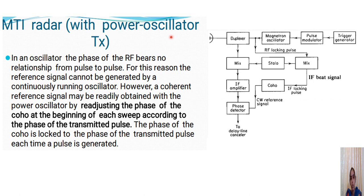Now we have an MTI radar with a power oscillator transmitter. Instead of a power amplifier, a magnetron oscillator is employed. In the oscillator, the phase of the RF bears no fixed relationship from pulse to pulse, so we cannot generate the reference signal from a continuously running oscillator. A coherent reference signal may be obtained by readjusting the phase of the coherent oscillator at the beginning of each sweep according to the phase of the transmitted pulse.